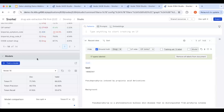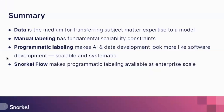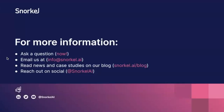That was the demo covering different use cases and data types. In summary: data is the medium for transferring subject matter expertise to a model. Manual labeling has fundamental scalability constraints, but programmatic labeling makes AI and data development look more like software development. Snorkel Flow makes programmatic labeling available at enterprise scale. For more information, please ask any questions you have, email us at info@snorkel.ai, visit our blog, or reach out on Twitter and LinkedIn. Thank you for listening.